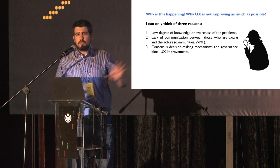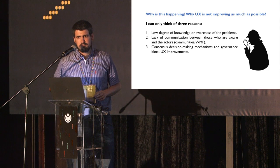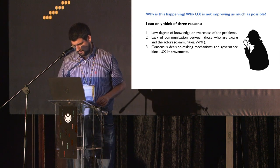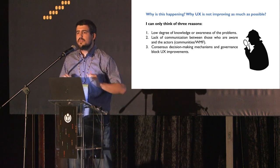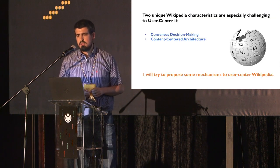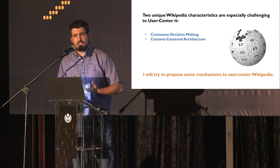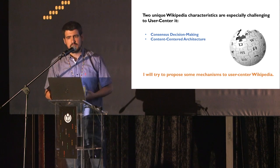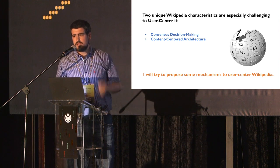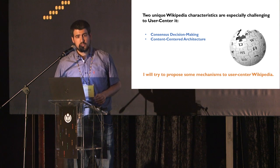I would like you to reflect on which one you think is more likely. In my opinion, the second and the third are crucial. Wikipedia has two unique characteristics that make it more challenging to transform it into a user-centered design process. The first is consensus decision-making — there is no central decision-making, so it's harder to implement changes.